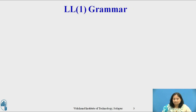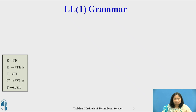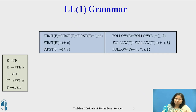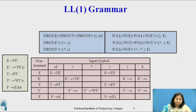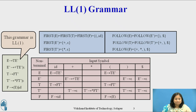What do we mean by LL1 Grammar? Consider the grammar for arithmetic expressions with the productions: E derives T E-dash; E-dash derives plus T E-dash or epsilon; T derives F T-dash; and F derives open parentheses E or id. Looking at the first and follow sets for this grammar and the parsing table, the parsing table has no multiply defined entries, hence this grammar is LL1.